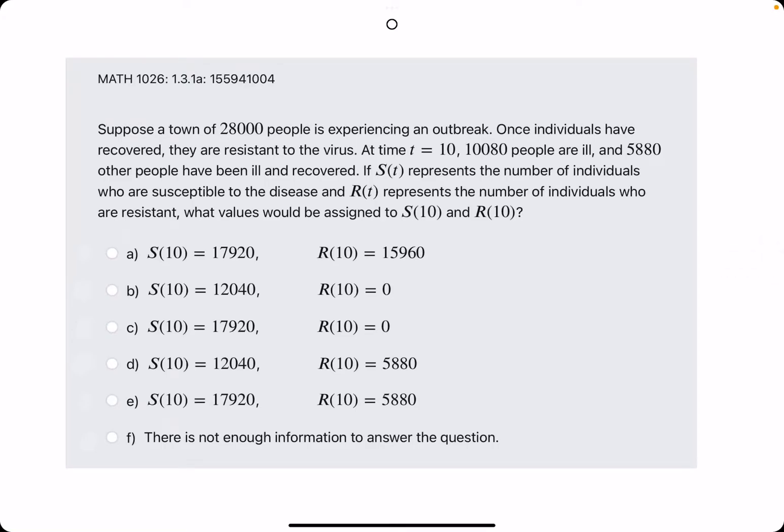Okay. In this problem, they tell us that a town of 28,000 people is experiencing an outbreak. Once individuals have recovered, they are resistant to the virus.